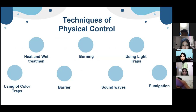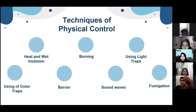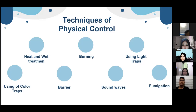Techniques of physical control include: number one, hot wet treatment; number two, burning; number three, using light traps; number four, using color traps; number five, burying; number six, solarization; and number seven, fumigation.